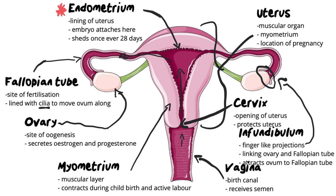Those are all the structures and functions you need to know. This will probably be the easiest part of a test or exam. The harder questions will be the menstrual cycle and hormone regulatory questions — I've linked that video above. You can watch that for a refresher on how the hormones produced within the ovary affect the endometrium and the process of oogenesis.